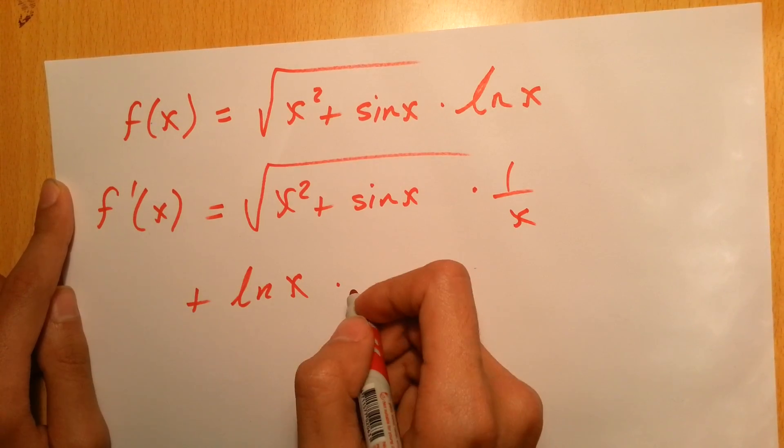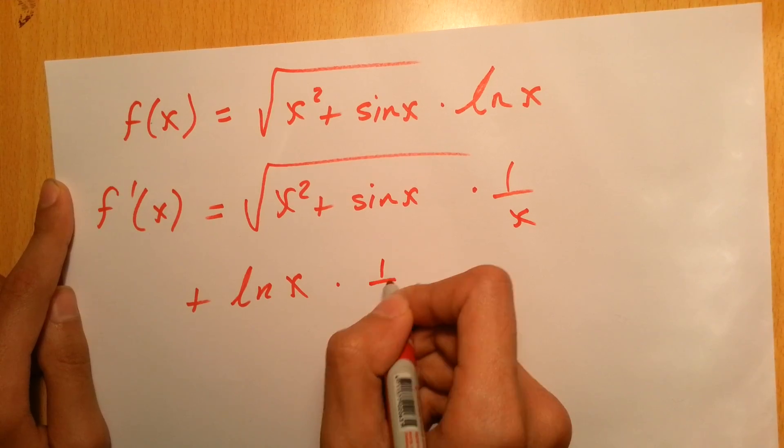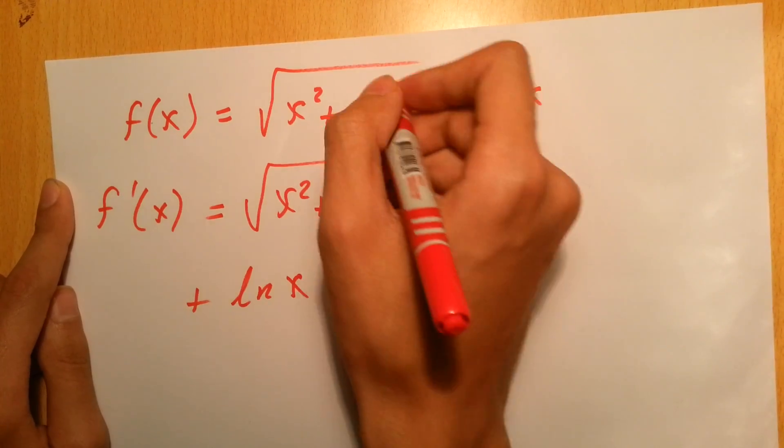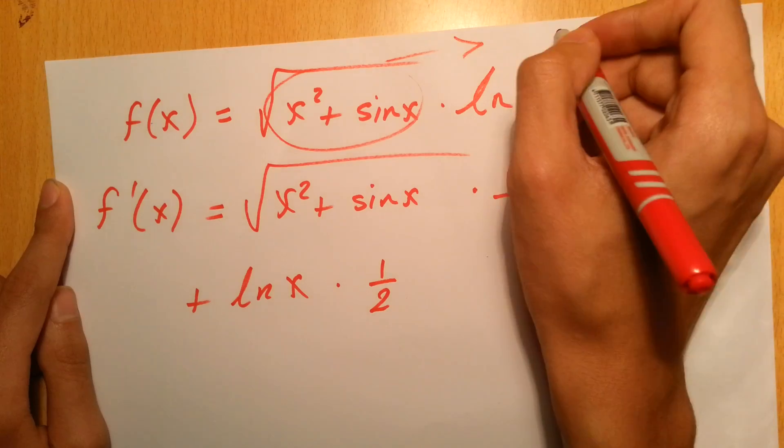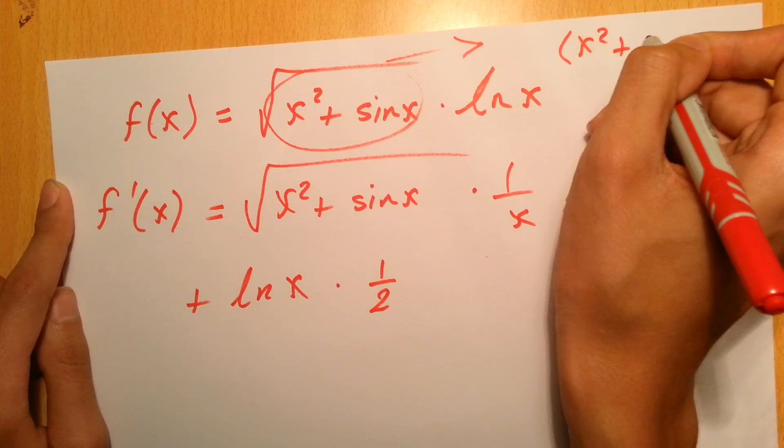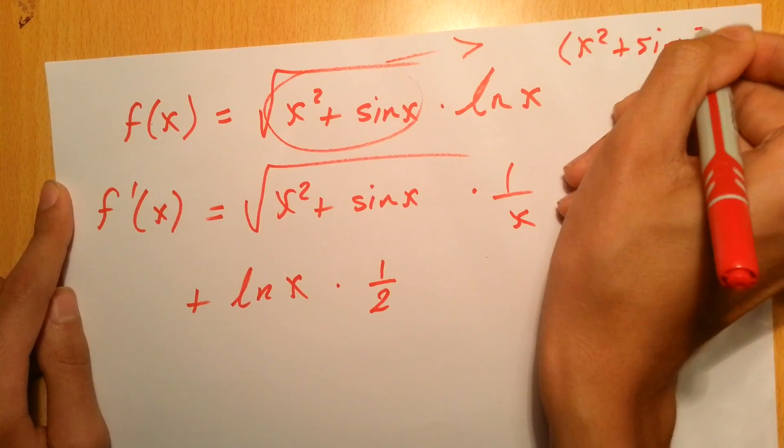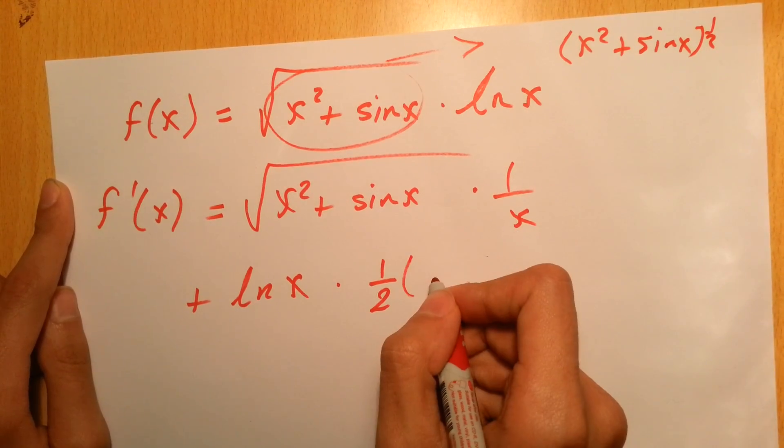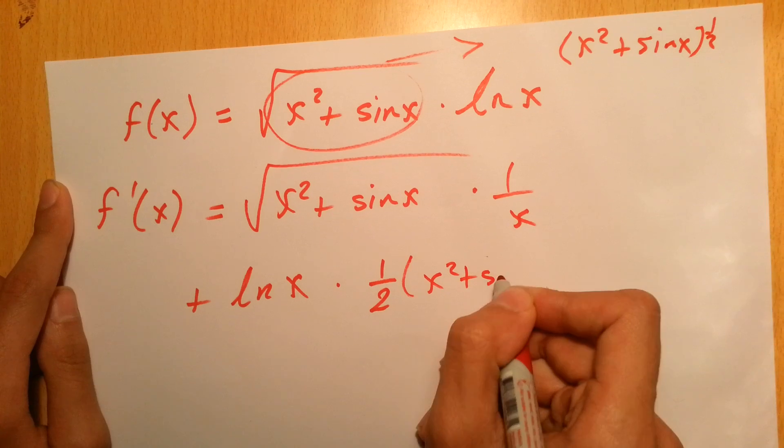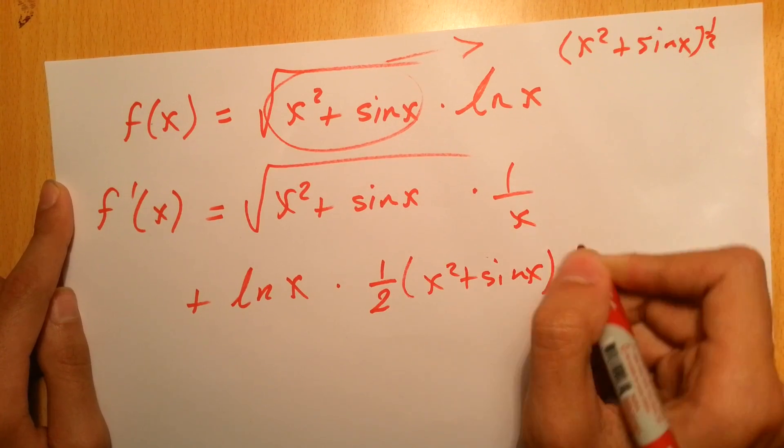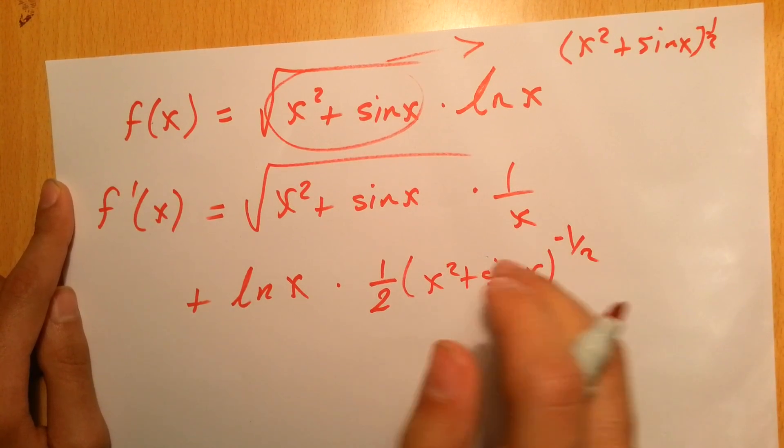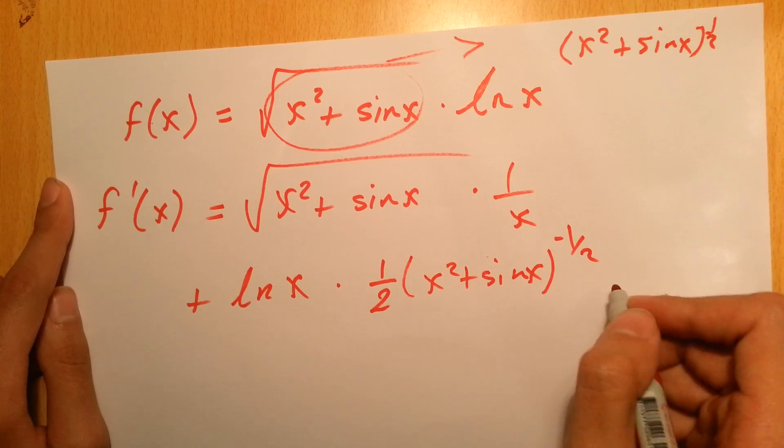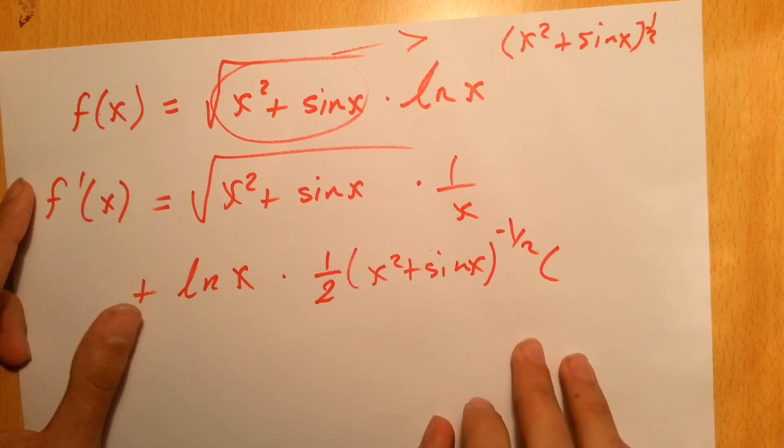Multiplied by the derivative of this one, which is going to be one half. We take it in this form: x squared plus sin x to the power of one half. So you take this half out, multiply by the same function to the same power minus 1, multiplied by the derivative of what's inside the brackets, which is 2x plus cosine x.